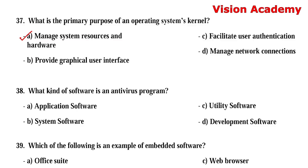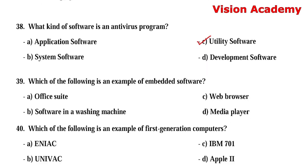Question 38: What kind of software is an antivirus program? Option A: application software. The right answer is Option C, utility software.